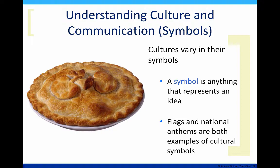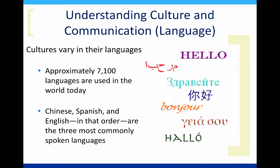Other countries have their own symbols that represent them. Great Britain has Big Ben, the queen, and bangers and mash. Another way that cultures vary is in their languages. Language is a primary way in which cultures pass down from one generation to the next. There are approximately 7,100 languages used in the world today, but three of them — Chinese, Spanish, and English — are the most commonly used.